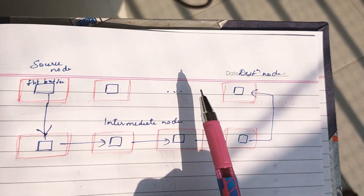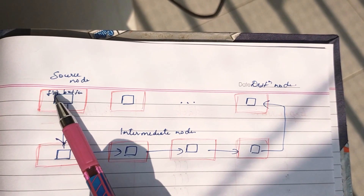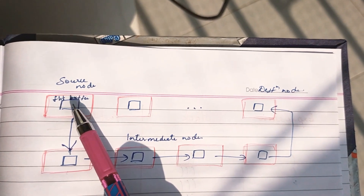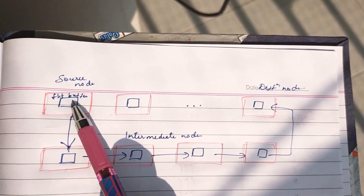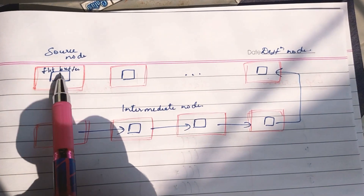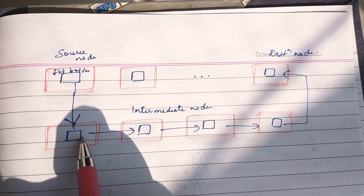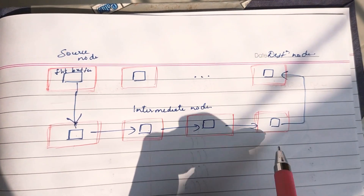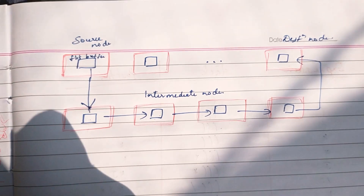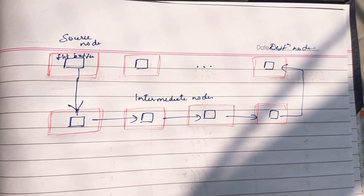This is the source node, destination node, and intermediate node. There are routers with flit buffers at each stage. The flits are transmitted through the flit buffers using a handshaking protocol between adjacent routers.